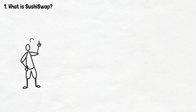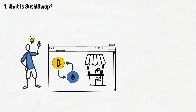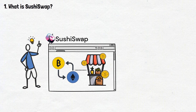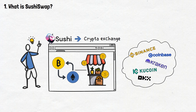First things first — what is SushiSwap? Think of it as a platform that allows you to swap one cryptocurrency for another. It's like a digital marketplace for these virtual currencies. In other words, SushiSwap, usually referred to as Sushi, is a crypto exchange, just like many other projects we've talked about in previous videos.